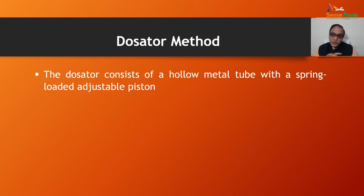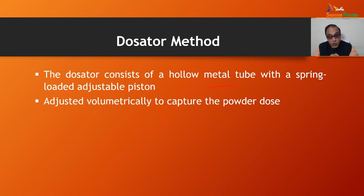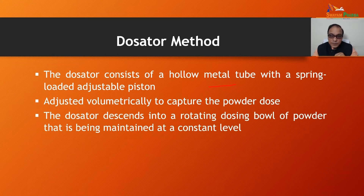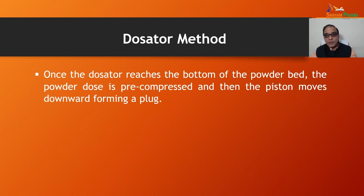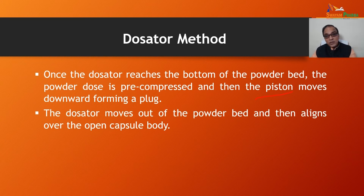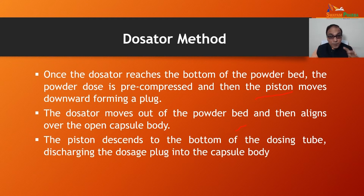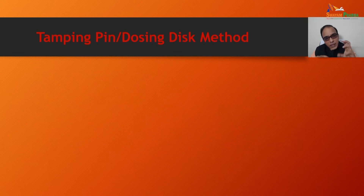In the dosator method, the dosator consists of a hollow metal tube with a spring-loaded adjustable piston, adjusted volumetrically to capture the powder dose. The dosator descends into a rotating dosing bowl of powder maintained at a constant level. Once it reaches the bottom of the powder bed, the powder dose is pre-compressed and the piston moves downward forming a plug. The dosator then moves out of the powder bed and aligns over the open capsule body, where the piston descends to discharge the dosed plug into the capsule body.